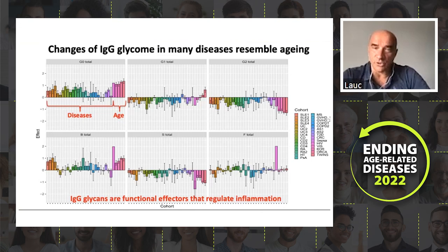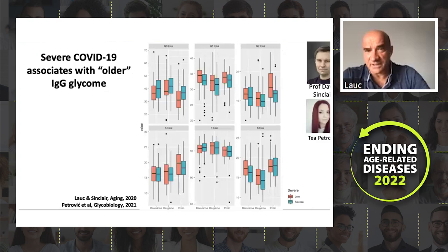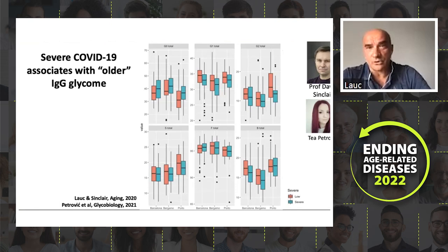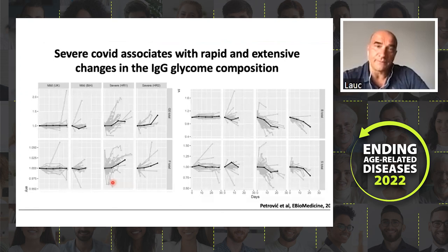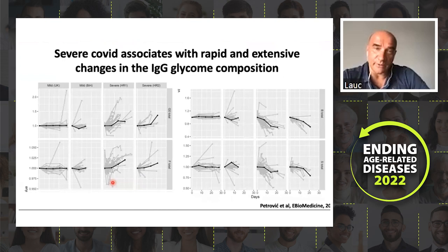One interesting example is COVID. David Sinclair and I speculated in early 2020 that biological age would be a better predictor of severe COVID than chronological age. Later that year, we were able to show that for glycans this is indeed the case — people with a higher glycan age have a higher risk of severe COVID. Not only that, but during COVID, severe disease causes accelerated glycan aging. We have seen people aging 10 to 15 years in just a couple of weeks with severe COVID, with some recovering and some not. In mild and asymptomatic COVID, we do not see any changes.